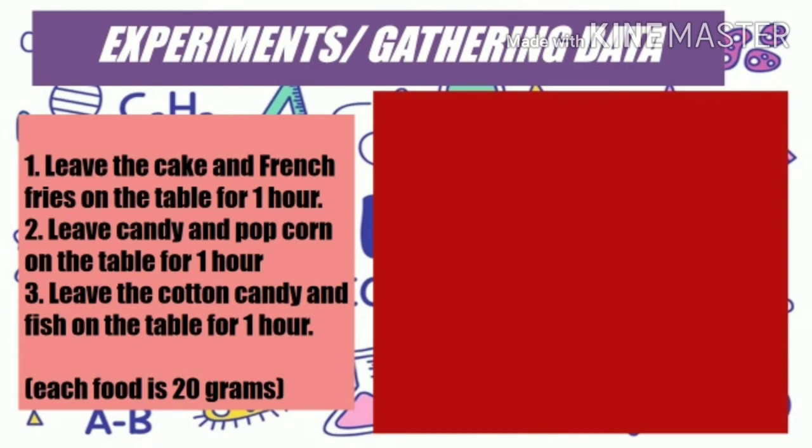Here is an example experiment with three setups. First, leave the cake and french fries on the table for one hour. Second, leave the candy and popcorn on the table for one hour. Third, leave the cotton candy and fish on the table for one hour. Cake, candy, and cotton candy are sweets containing sugar, while french fries, popcorn, and fish are foods with no sugar or little sugar. This is the test to see if ants are really fond of sugar.